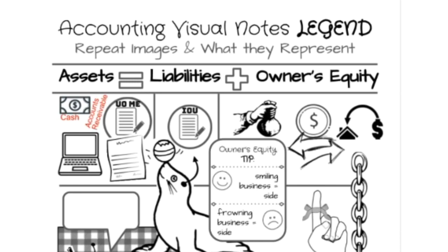Next up under assets, we have accounts receivable. This is of value to us because it means that we sold something to a customer but they have not yet paid us. You'll see the 'you owe me' — it means that a customer will be paying us money, but they haven't yet done so. Those are represented by accounts receivable accounts.